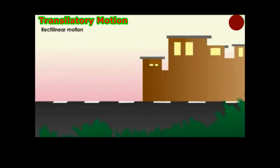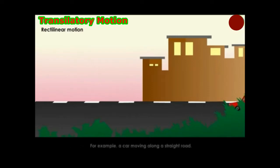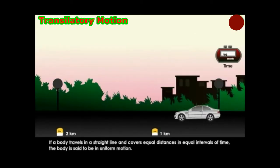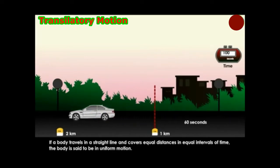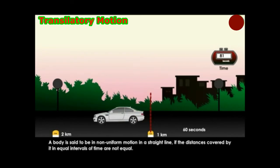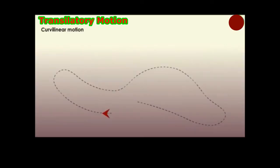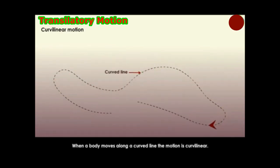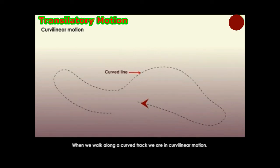A ball rolling on the ground, a boy sliding down a slope, and a stone hurled from a catapult are all in translatory motion. Rectilinear motion is when a body moves along a straight line. A car moving along a straight road covers equal distances in equal intervals of time — that is uniform motion. If distances covered in equal intervals are not equal, it is non-uniform motion. When a body moves along a curved line, the motion is curvilinear — for example, walking along a curved track.